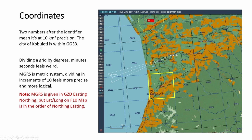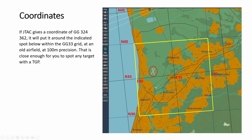For example the grid identifier is GG 33. Here is the nearby area, and let's say the target is this feature here.